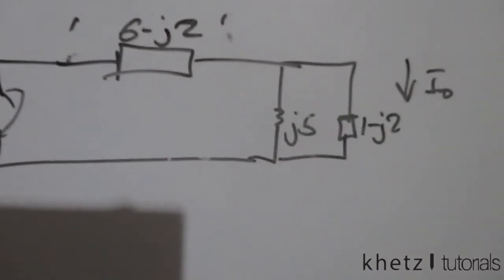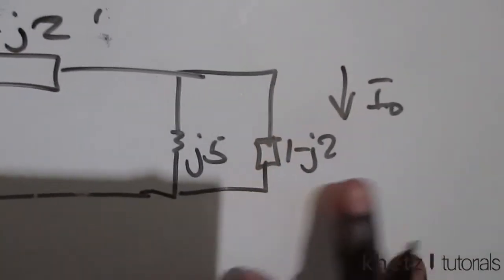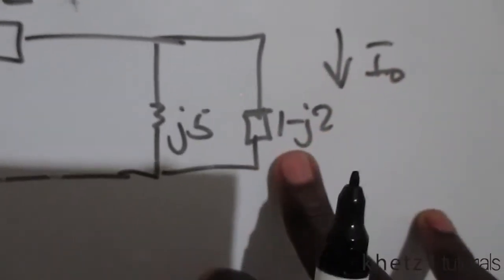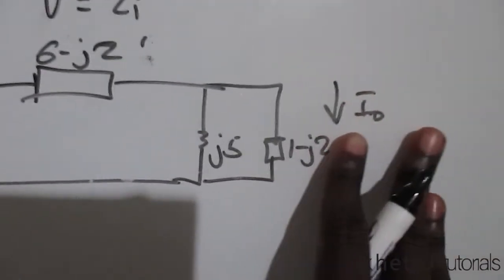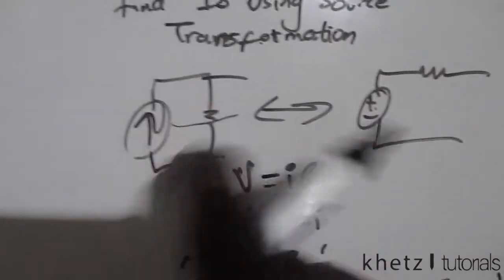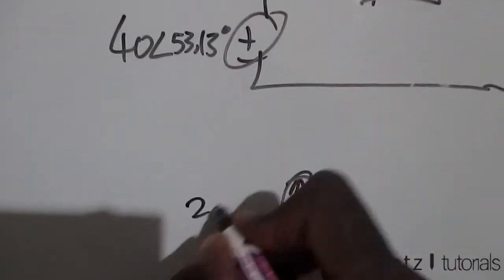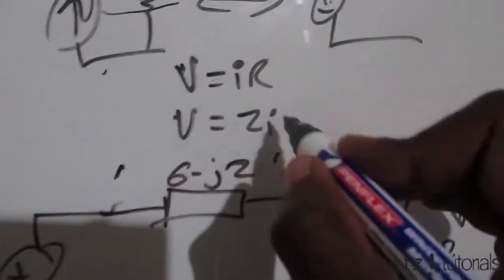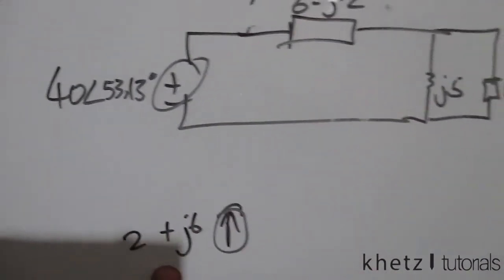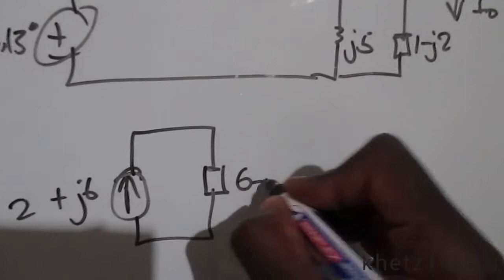Try as much as you can not to touch the impedance which has the variable you want to find. The impedance with our variable is 1 minus j2, so let's not touch that. Let's transform this new configuration into a current source. We get a current source of 2 plus j6 — found by I equals V divided by Z — and the impedance value is still 6 minus j2.